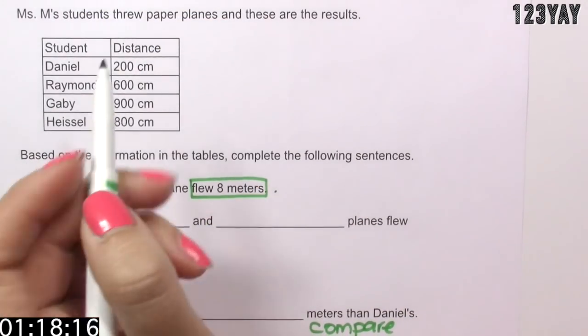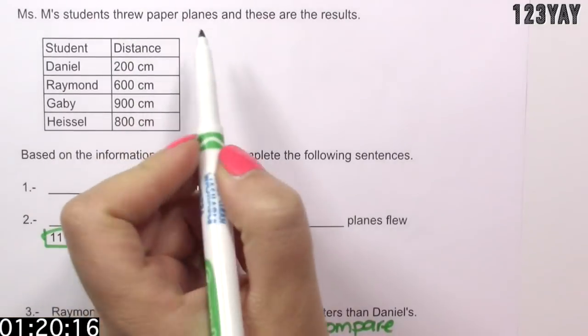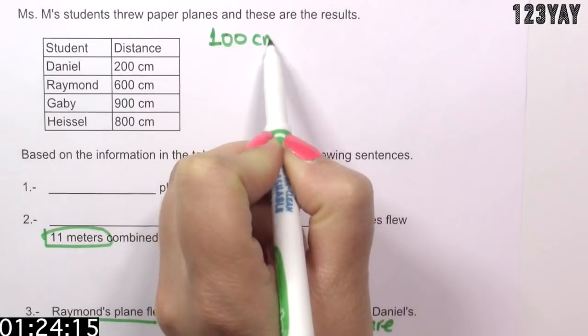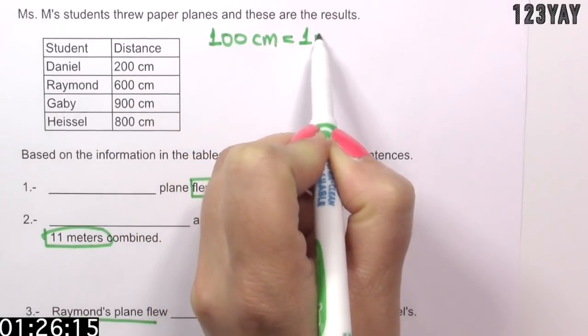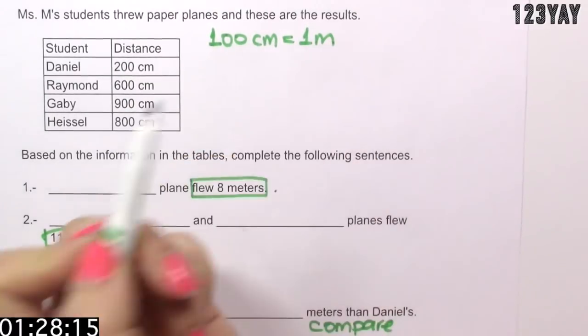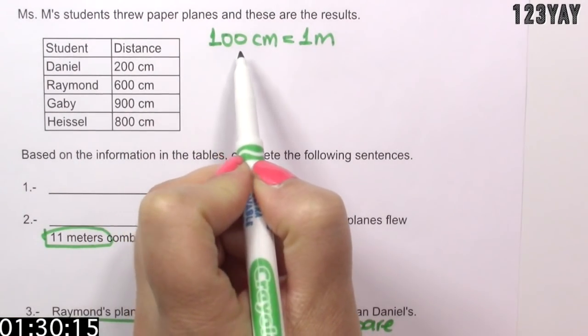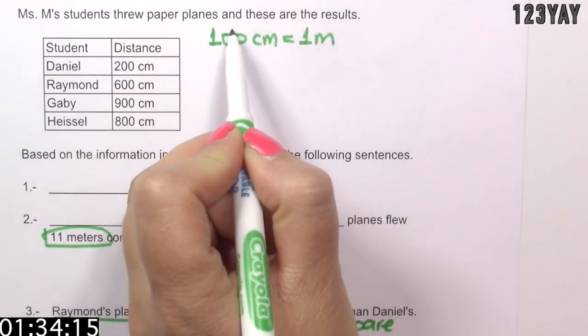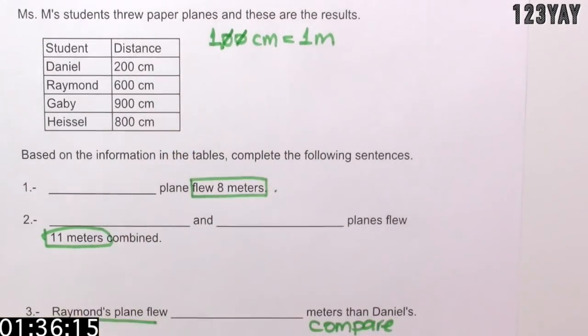Awesome! Okay, so let's convert these centimeters to meters. If 100 centimeters equal to 1 meter, do you see the relationship here? You just have to divide by 100 and what is the easiest way to do that? You eliminate the zeros.